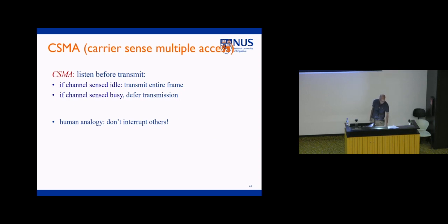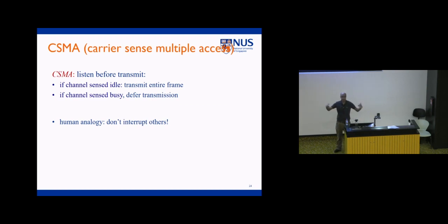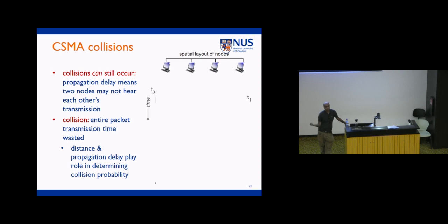One reason slotted ALOHA doesn't do well is that if I had a packet to transmit, I just sent without caring what others were doing. One way of improving that is carrier sense — before we send, we listen to see if somebody else is transmitting. If the channel is idle, we transmit. While this reduces collisions, it does not completely eliminate them due to propagation delay. You may have started transmitting, but your signal hasn't reached me yet, so I'll still sense the channel as idle, leading to collisions.